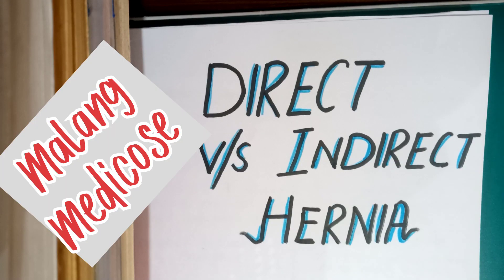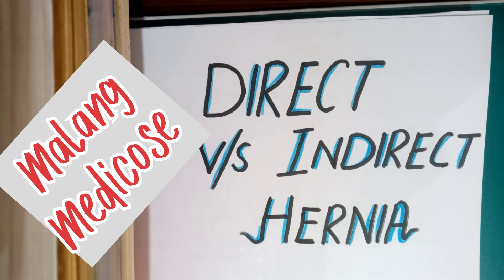Hello everyone, this is Dr. Zainab and I hope you are having a great day. Today our topic is direct and indirect inguinal hernia. But before going to our topic, you must know what is hernia. Hernia by definition is abnormal protrusion of cavity contents through a weakness — that weakness may be normal or abnormal. In simple words, just remember that it is abnormal protrusion of cavity contents through a weakness.